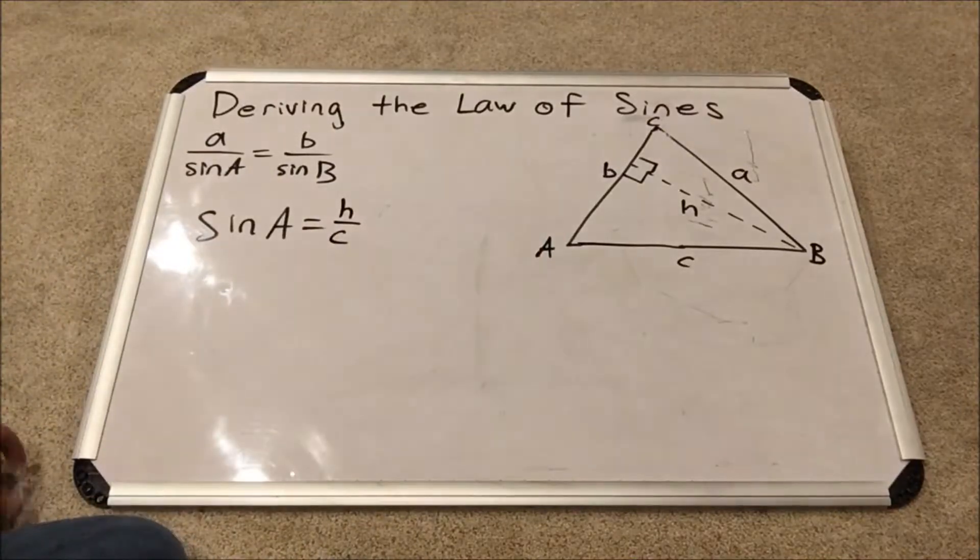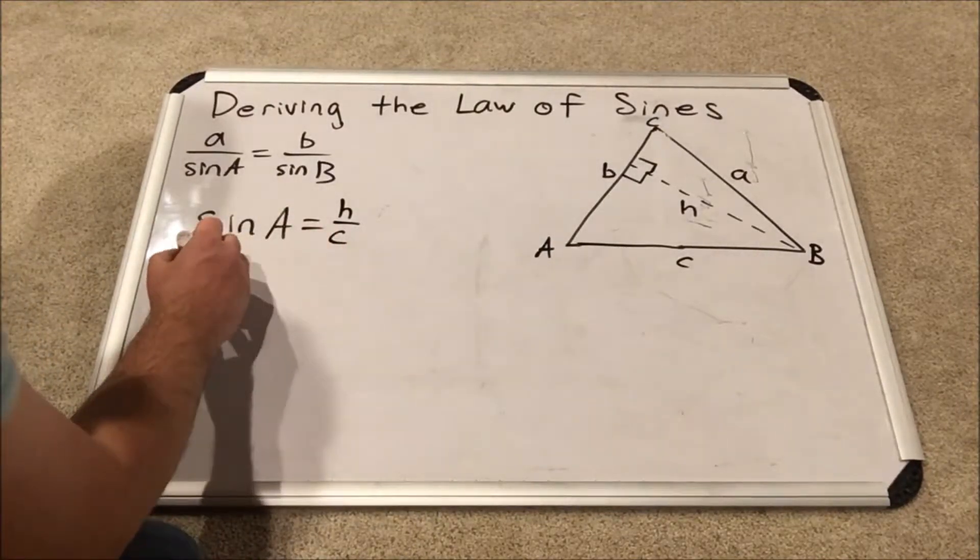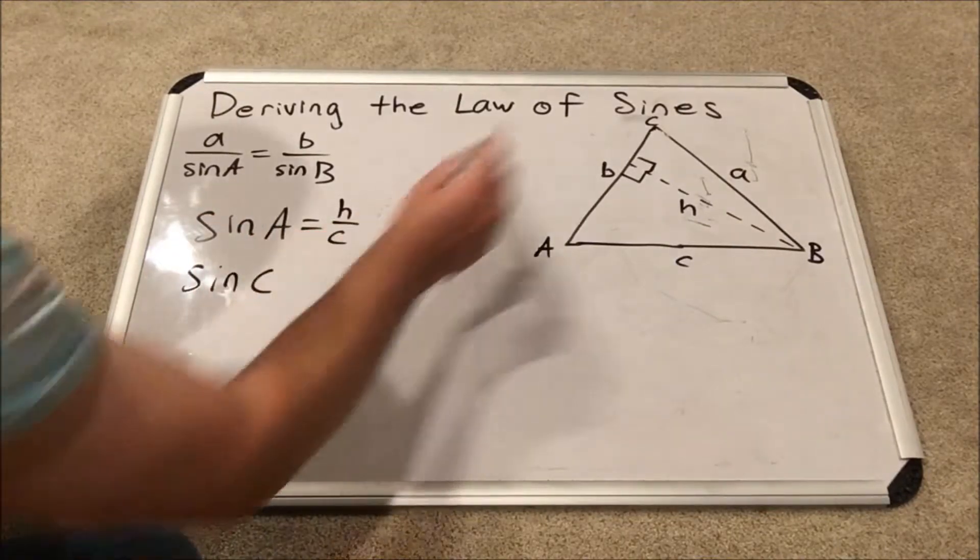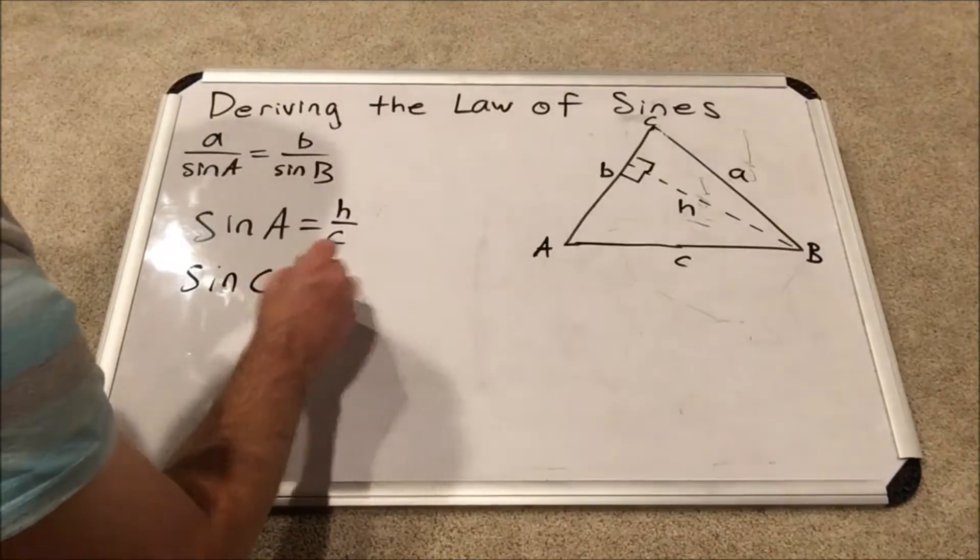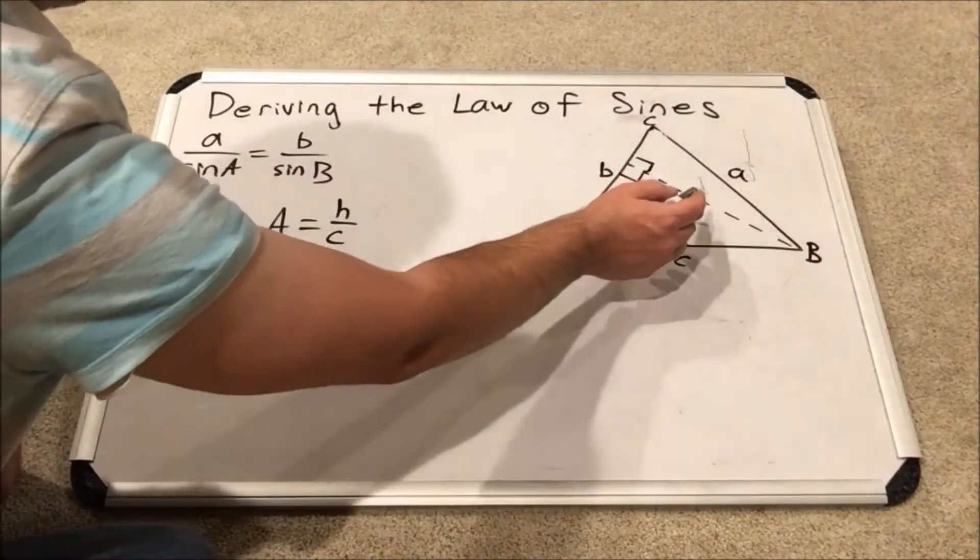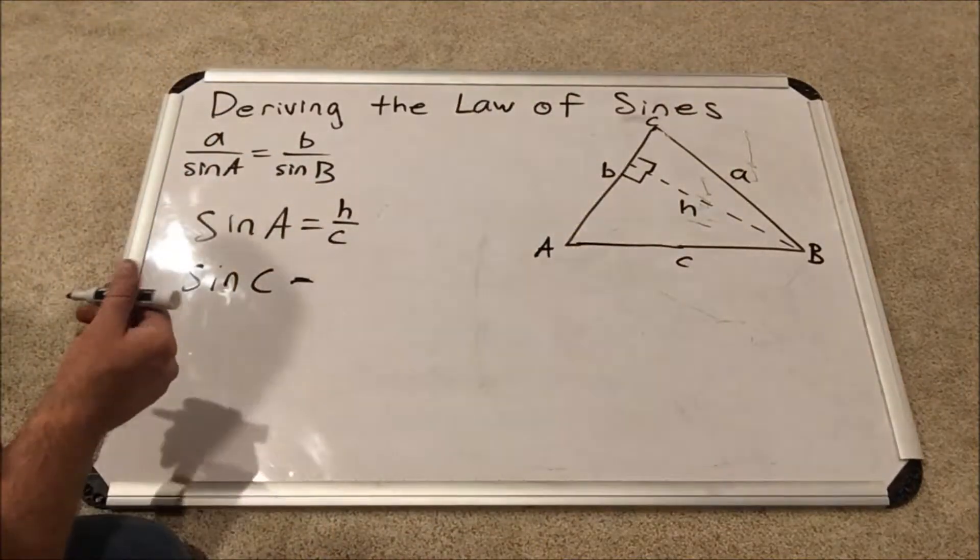That's different when it equaled the first time, but they have to be equivalent. And then I'm going to do an expression for sine of angle C. If you look at the triangle through angle C, you could see that the opposite side is again the altitude H over the hypotenuse A.